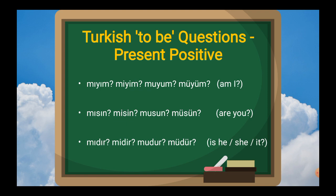For 'are you?' (singular): sın, sin, sun, sün. That is: mı plus sın, mi plus sin, mu plus sun, mü plus sün.